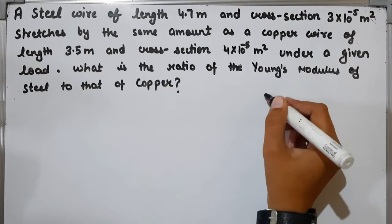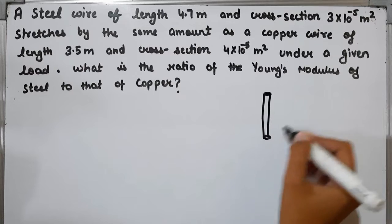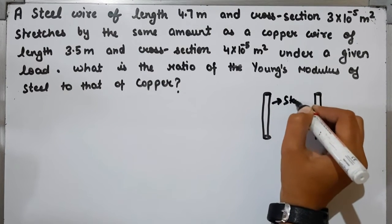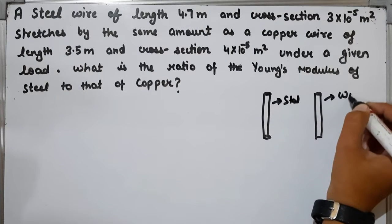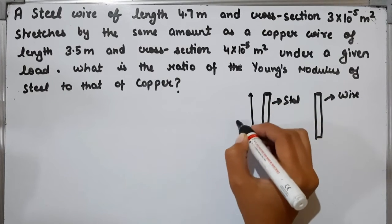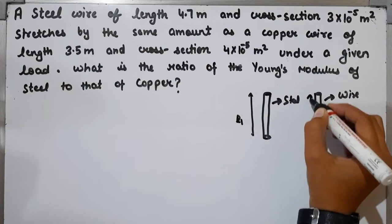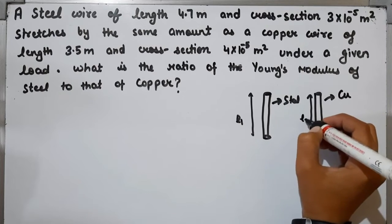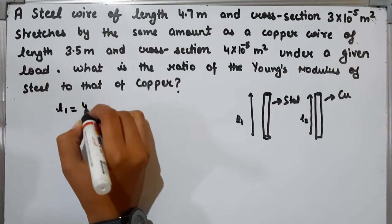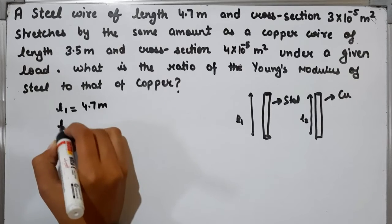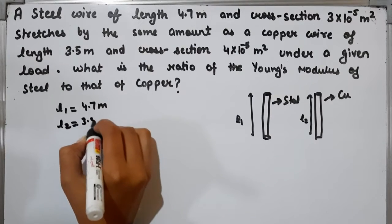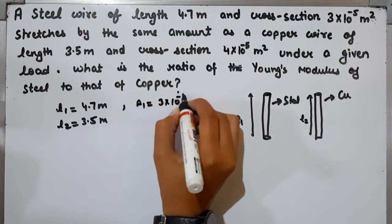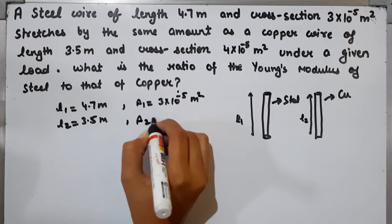Two wires are given: one steel and one copper. For steel wire, length L1 = 4.7m and cross-section A1 = 3×10^-5 m². For copper wire, L2 = 3.5m and A2 = 4×10^-5 m².